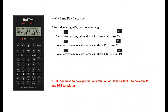Now we move on to calculating NFV, payback period, and discounted payback. After calculating NPV, press the down arrow — the calculator will show NFV, then press CPT. Press the down arrow again and the calculator will show payback period — press CPT and you'll get the same answer as on Excel. The same goes for the discounted payback period: press the down arrow once, the discounted payback period will show up, press CPT, and you'll get the same answer as the one we got on Excel.